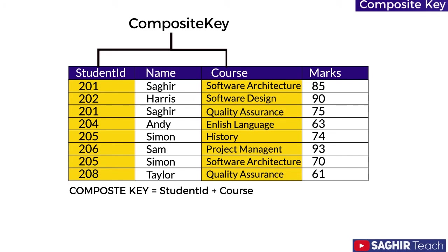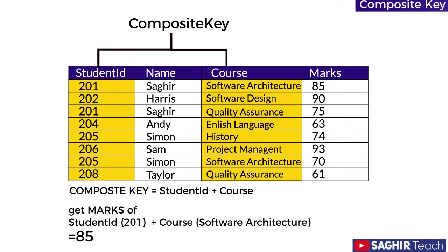Now the composite key equals student ID plus course ID. The record can be fetched as: get marks of student ID 201 plus course software architecture, which equals 65 marks. This is the classic case where one column cannot be your primary key — it has to be the course column as well, making it a combination. This combination of primary key columns is called a composite key.